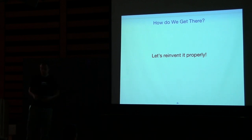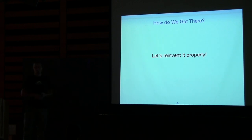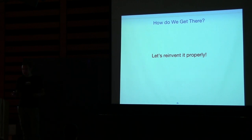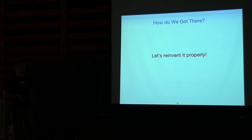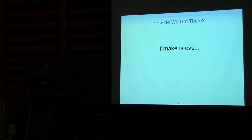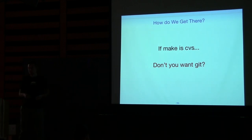So let's reinvent it properly. The problem with Make is it was designed 30 years ago to build simple Unix utilities, and for that it works pretty well. But for the past 20 years, what's been happening in GNU Make development is trying to stretch this simple model to cover ever more complex projects — and that doesn't work. I've tried it myself, and you've seen the make file result. To put it this way: if Make is CVS, don't you want to know what a Git equivalent of a build system would look like?